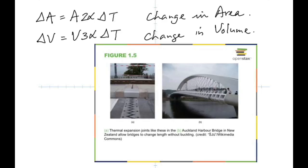Change in length is called linear expansion. Change in area is called superficial expansion — the word 'superficial' means surface, so it's the surface area changing. Change in volume is called cubical expansion.